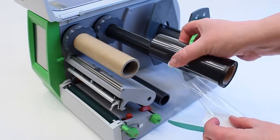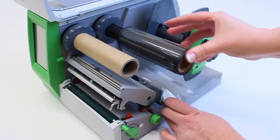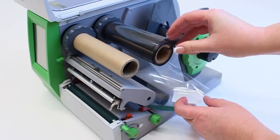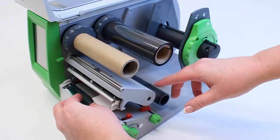Place the ink ribbon on the back spindle with the ribbon rotating in a clockwise direction towards the back of the printer. Thread the loose end under the printhead.